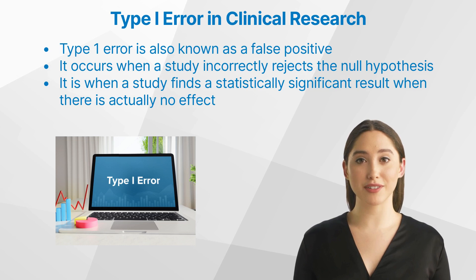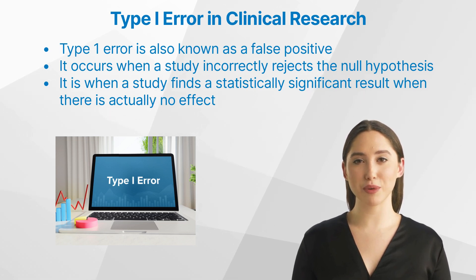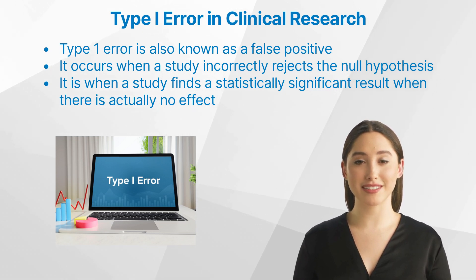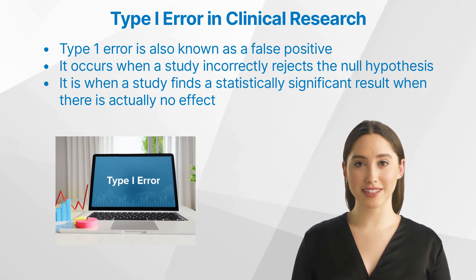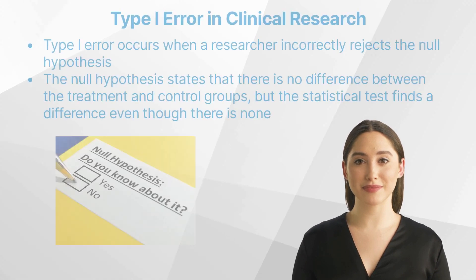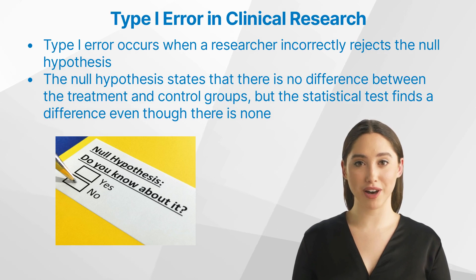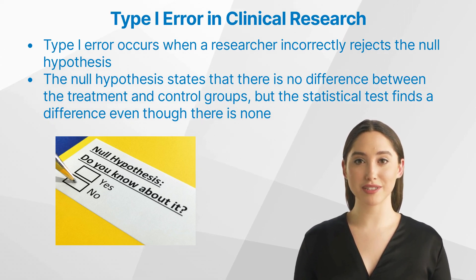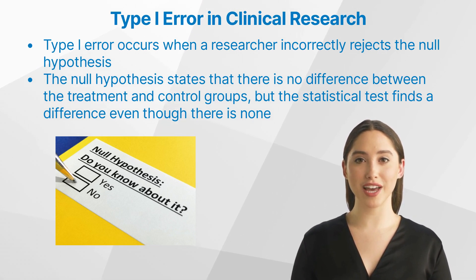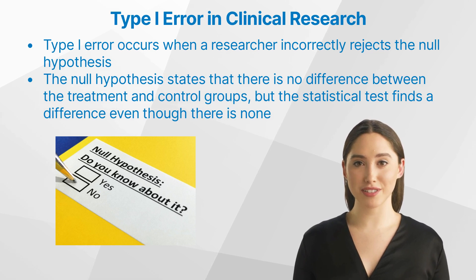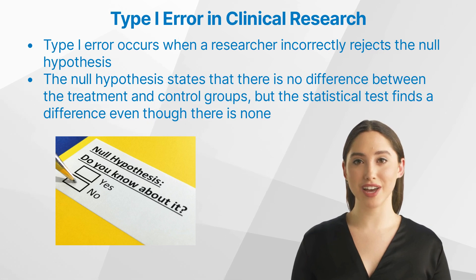This is an important concept to understand in clinical research because it can lead to incorrect conclusions and have serious implications for making decisions about treatments, therapies, or interventions. Type 1 error occurs when a researcher incorrectly rejects the null hypothesis — meaning the statistical test has found a statistically significant result even though there is no effect.